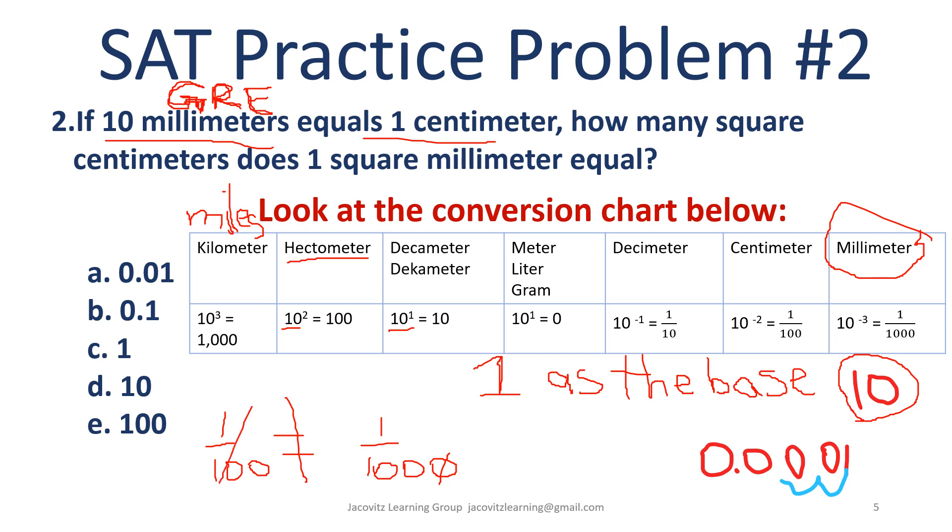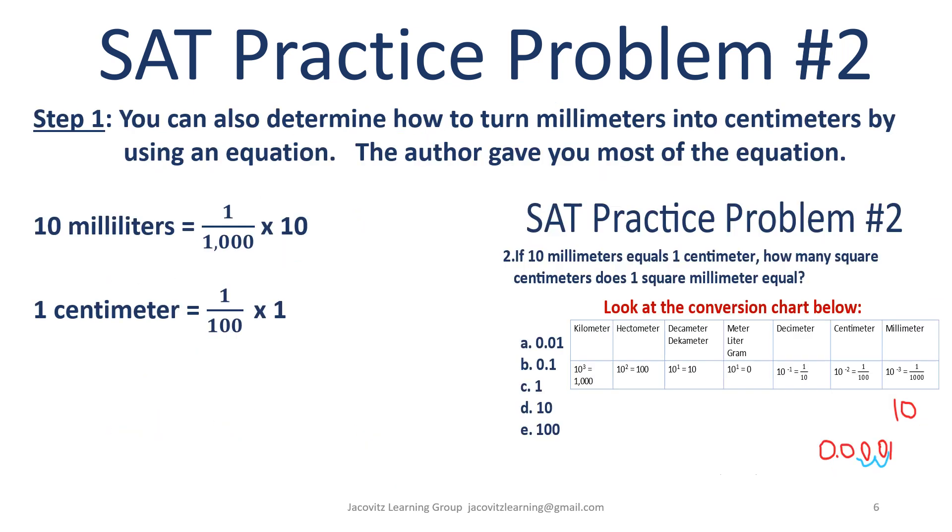We're going to do this with an equation. 10 millimeters is equal to 1/1000 times 10, and one centimeter is 1/100 times 1, because this unit here stays the same.